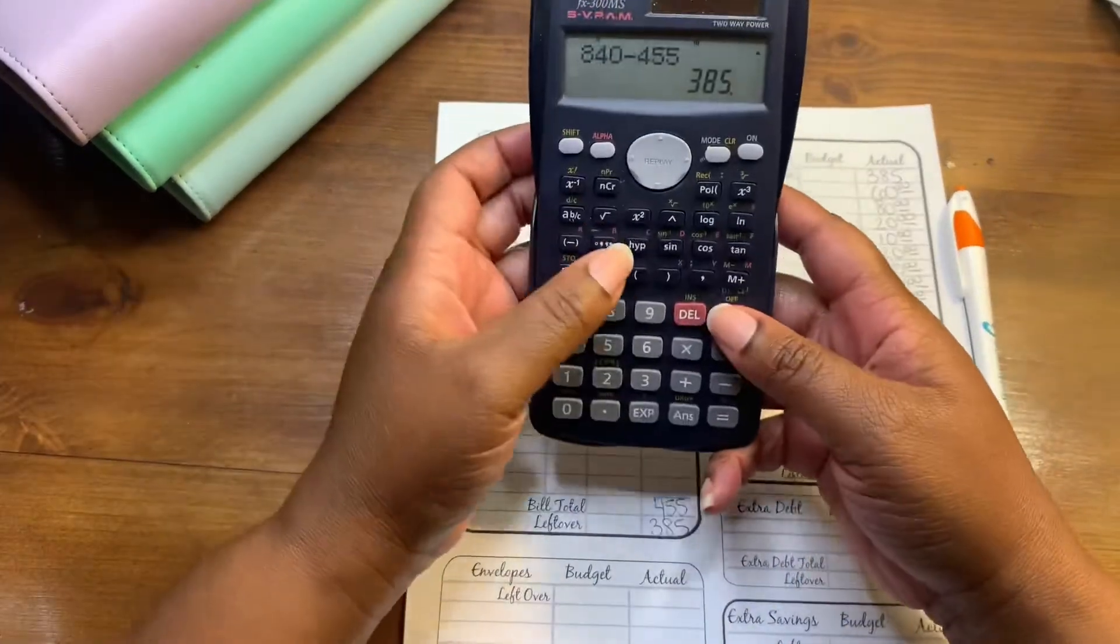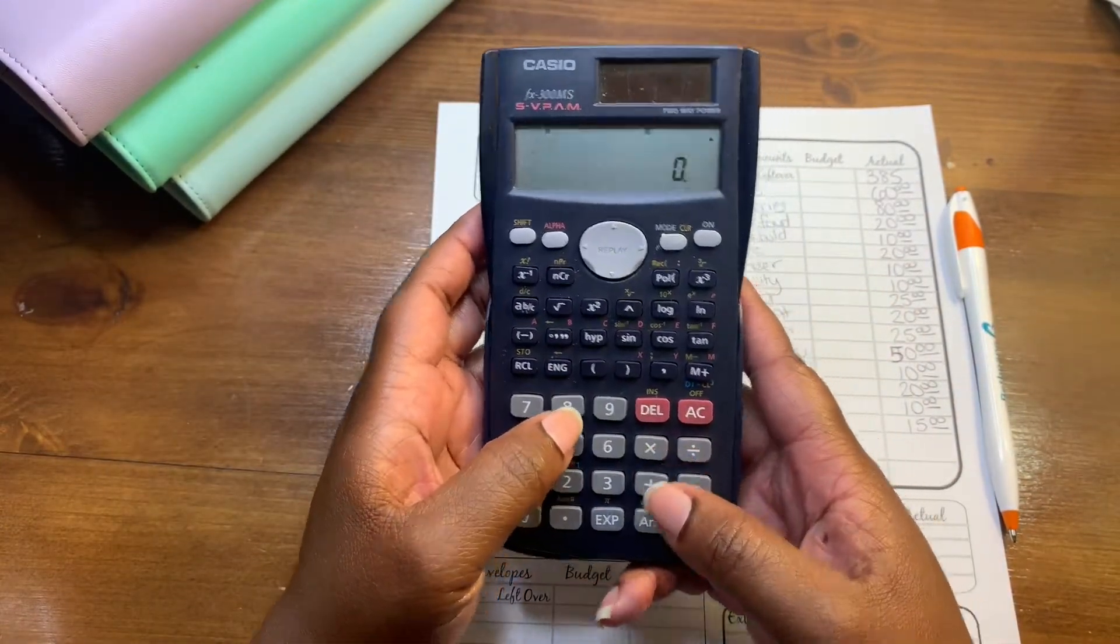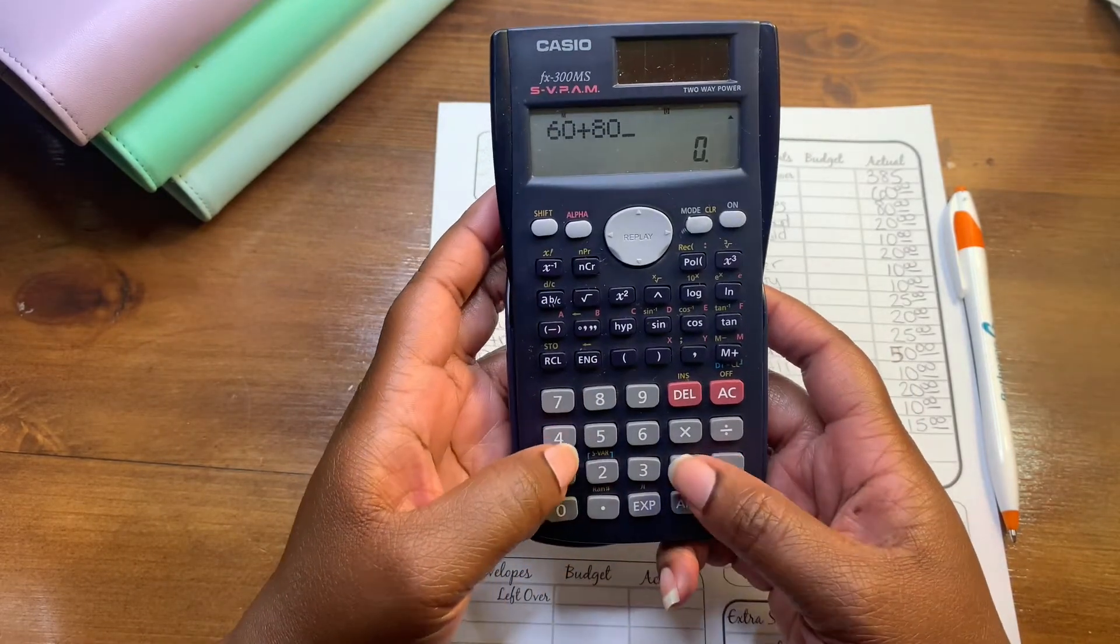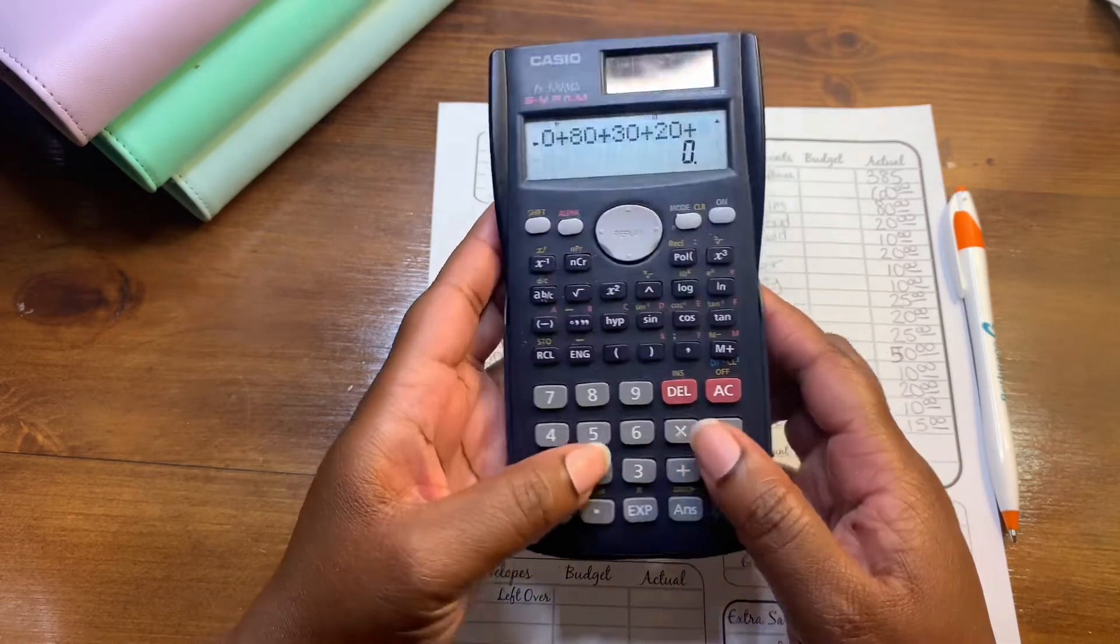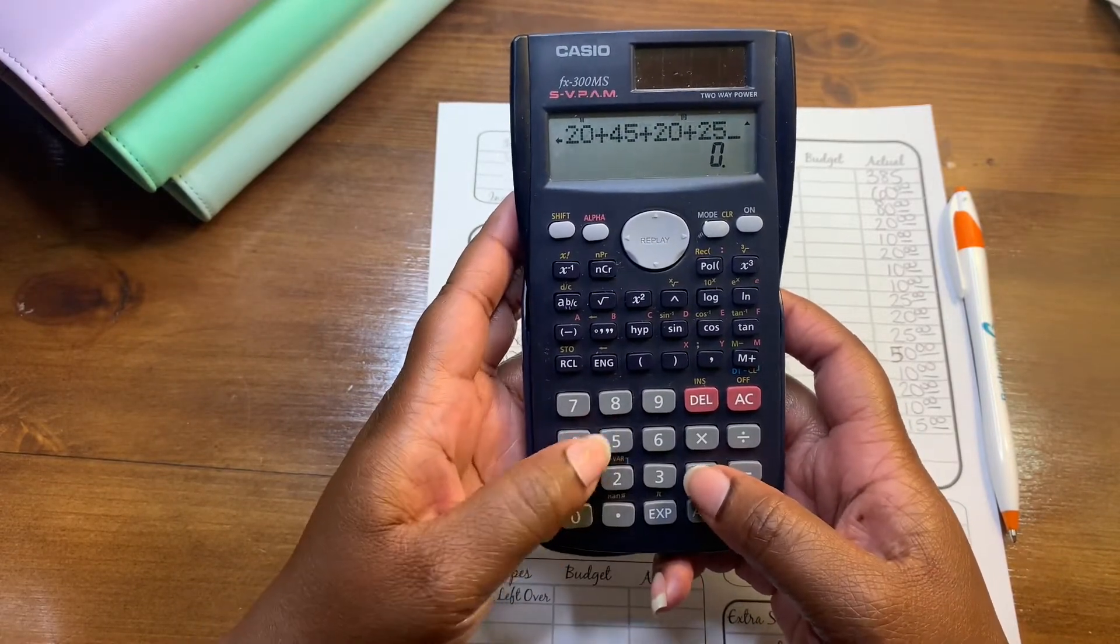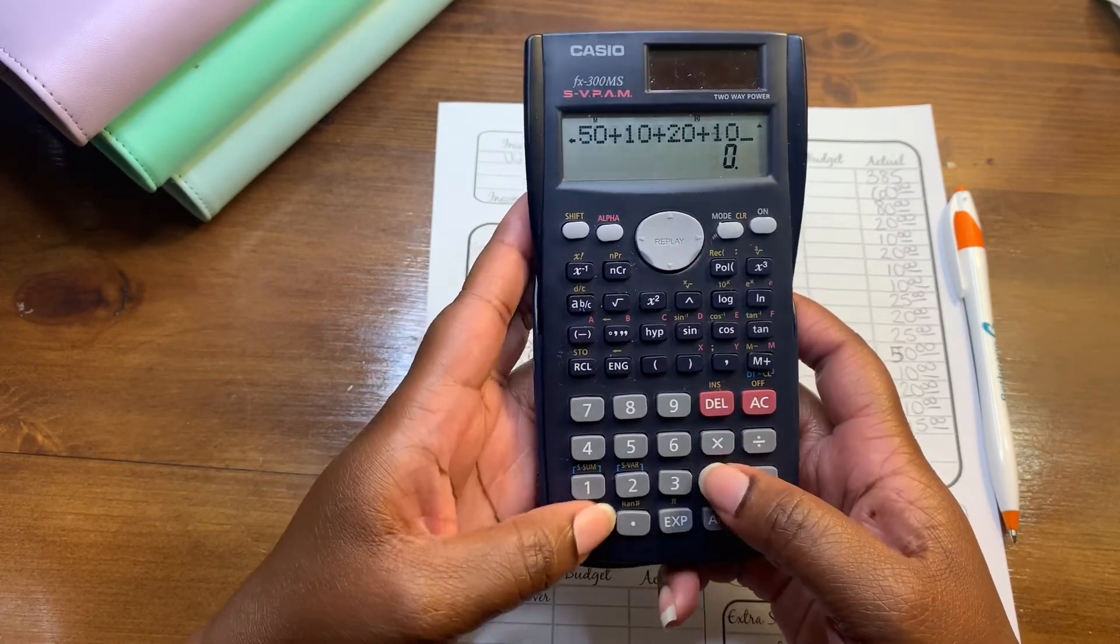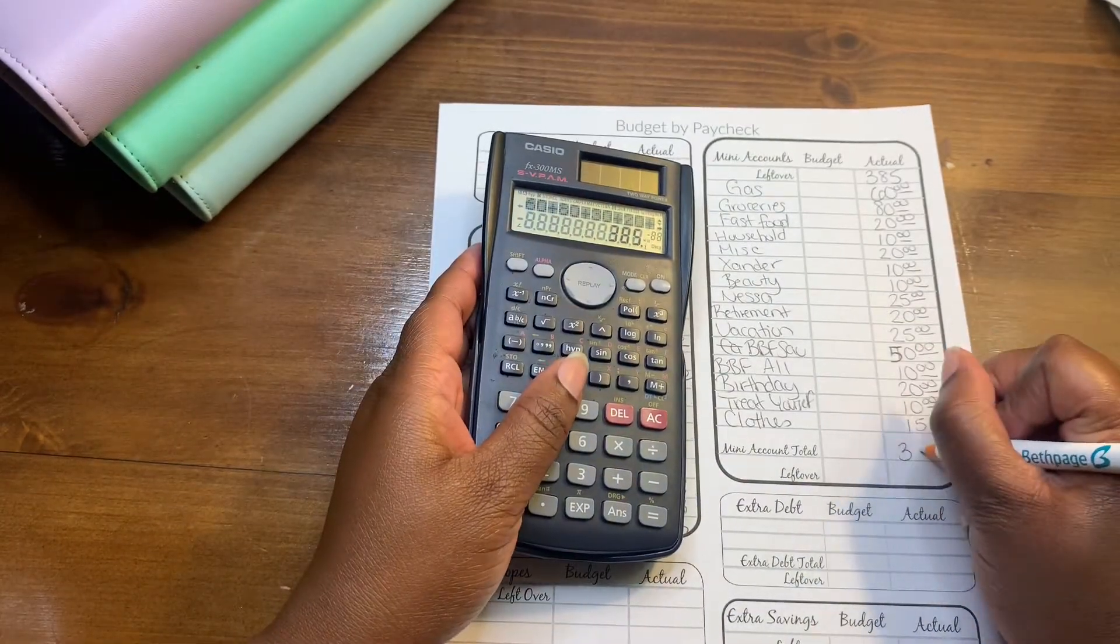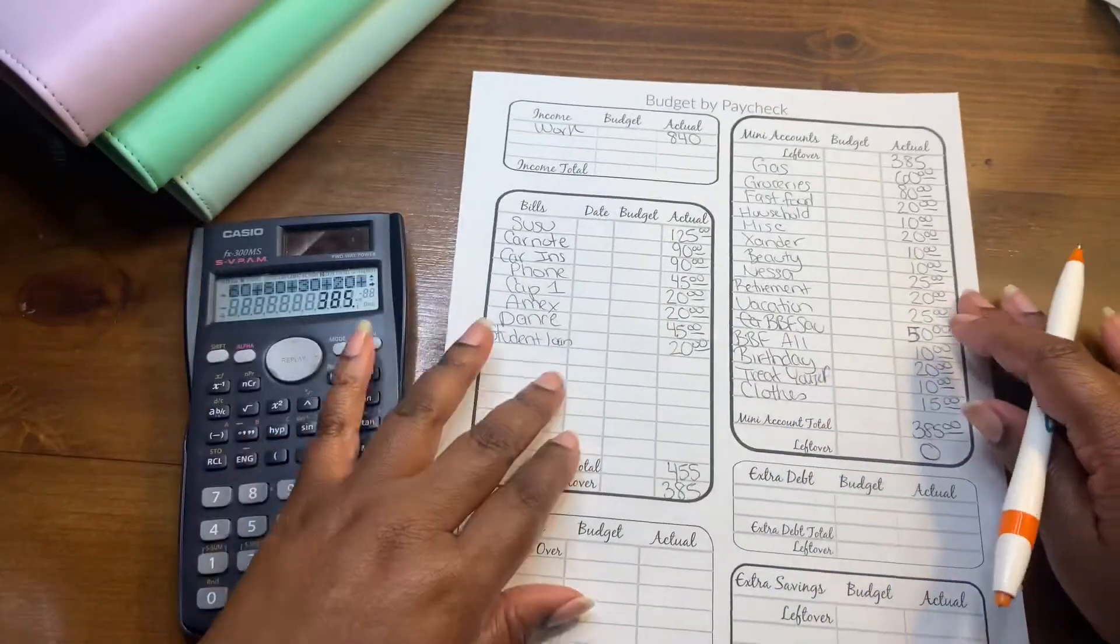Now we're gonna add all of these up: $60 plus $80 plus $30 plus $20 plus $45 plus $20 plus $25 plus $50 plus $10 plus $20 plus $10 plus $15 equals $385 exactly. So as you see there's no money left over.